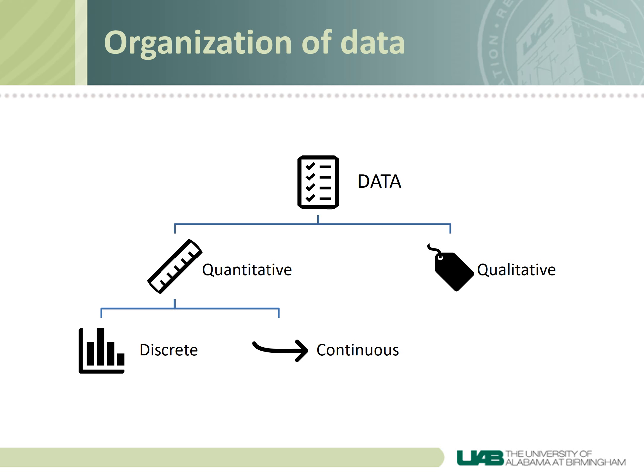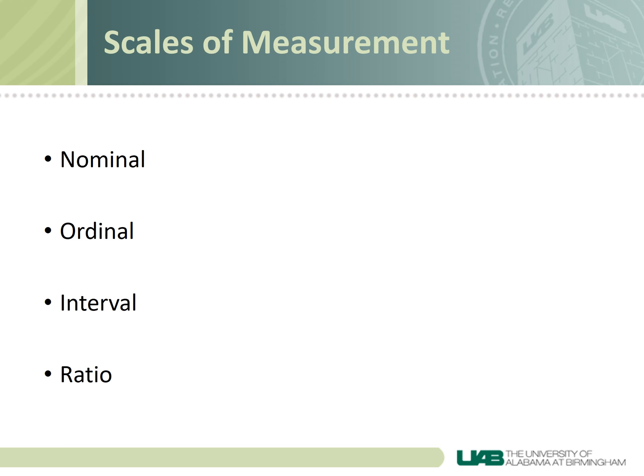An example of qualitative values would be a person's name, race, or eye color — they're just labels with no real measurable properties. Now, if we count the number of a certain race in a sample, we are converting this qualitative variable into a quantitative one. There are different scales of measurement, or levels of measurement, that a variable can be measured at. There are four general scales of measurement: nominal, ordinal, interval, and ratio — in order from simplest to most complex.